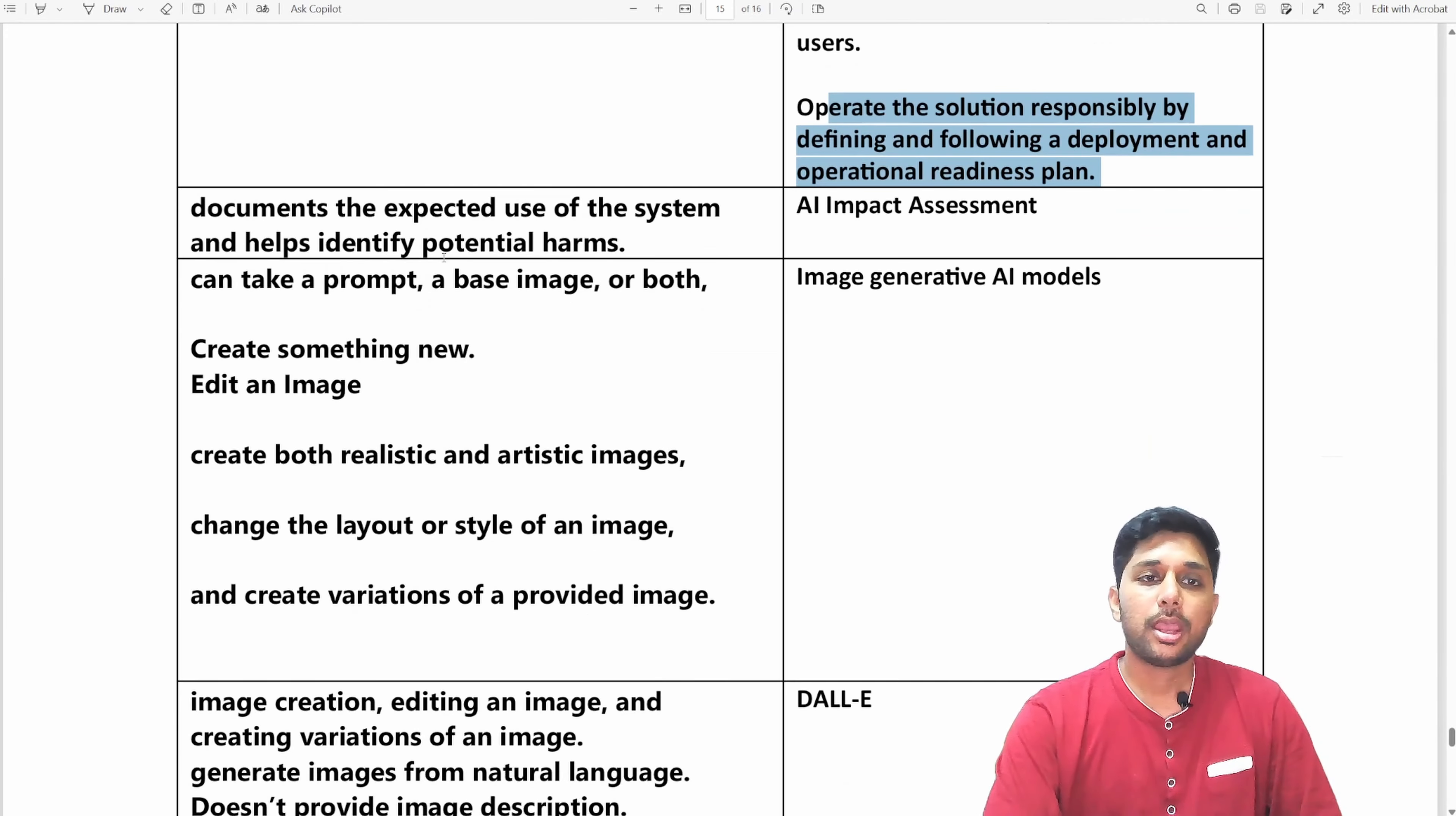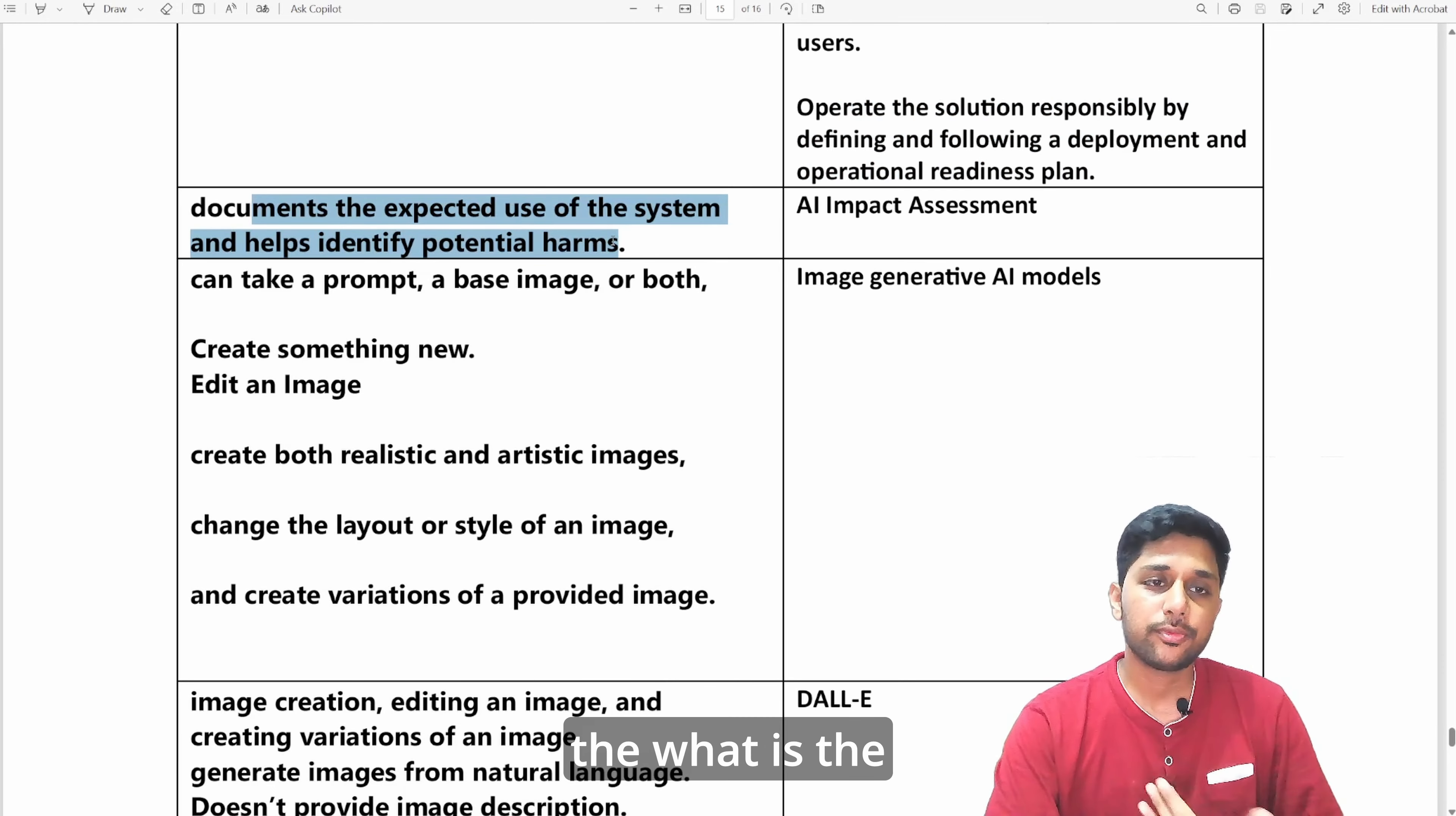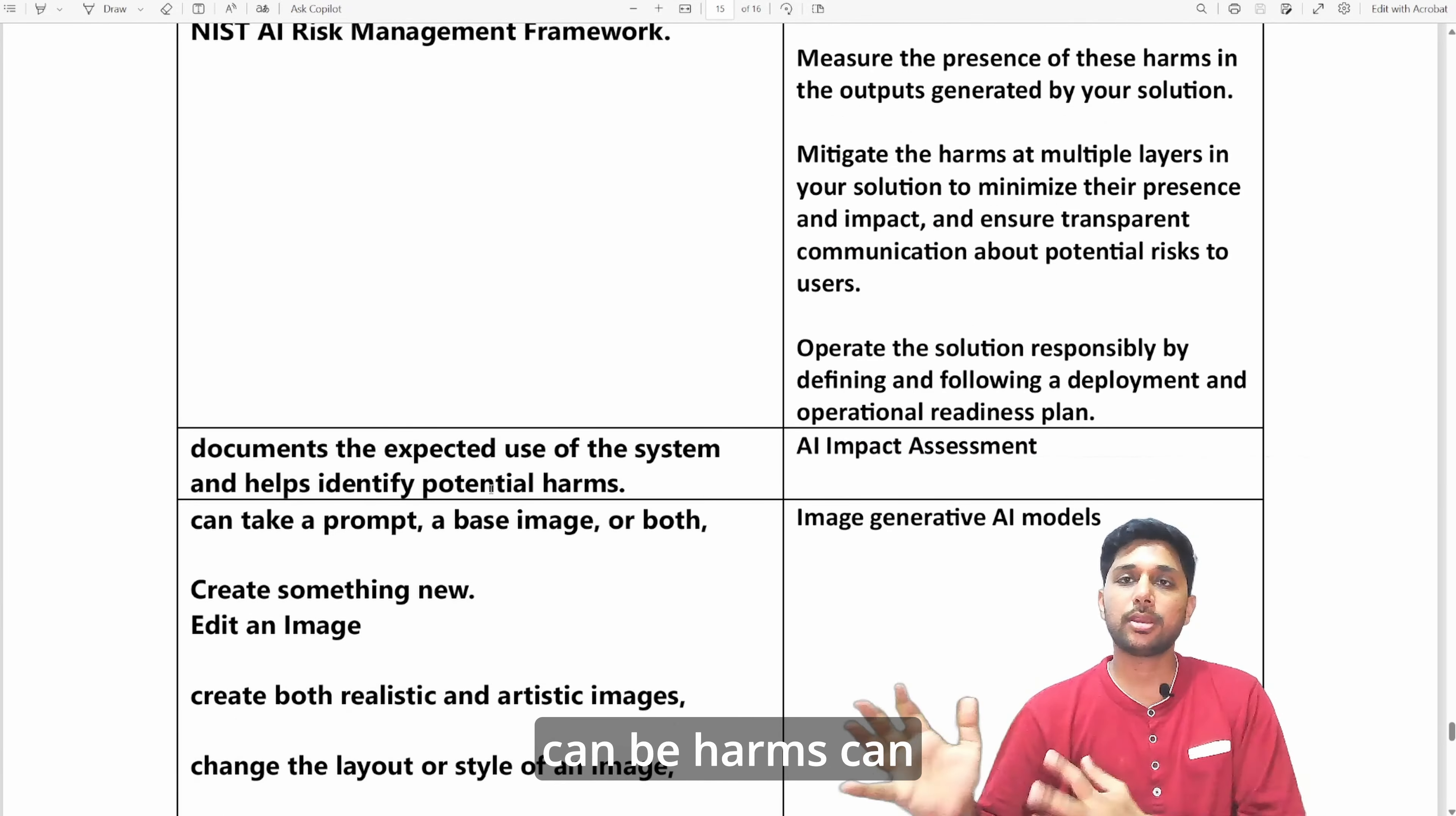It can be asked what is the document where you document all the expected use of the system and which can help the user to identify the potential harm? It is AI impact assessment which you do here to see what harms can be caused by your AI model or machine learning model and how you are expected to use this system.